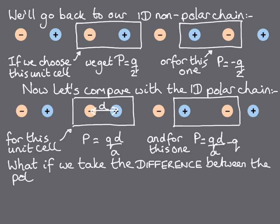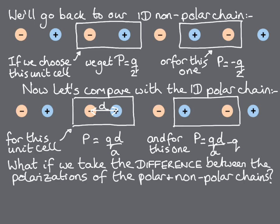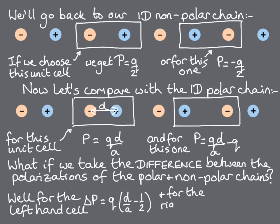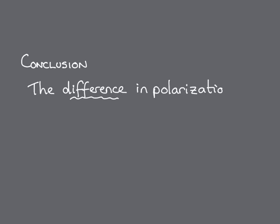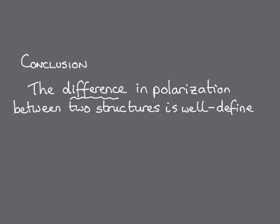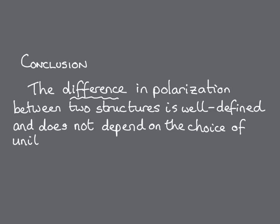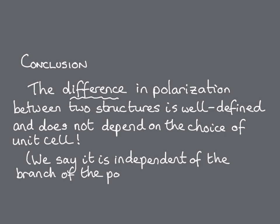But look at what happens when we take the difference between the polarizations in the non-polar and the polar chains, using the same unit cell in each case. For the left-hand unit cell, we get a polarization difference delta p, which is q times d over a minus a half, which is exactly the same as the polarization difference for the right-hand unit cell. So we can conclude that the difference between two structures is a well-defined single value and doesn't depend on the choice of unit cell that we use to calculate it. While we know that the polarization is a lattice of values, there is no lattice of polarization differences. In fact, we say that the polarization difference is independent of the choice of the branch on the polarization lattice that we use to calculate it.